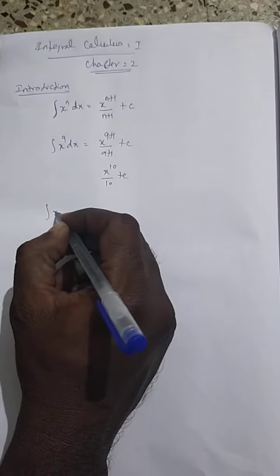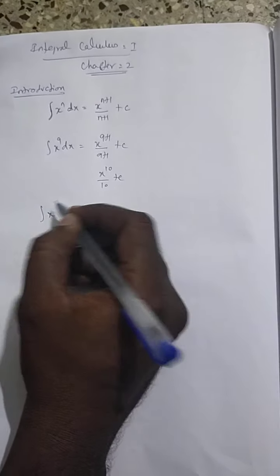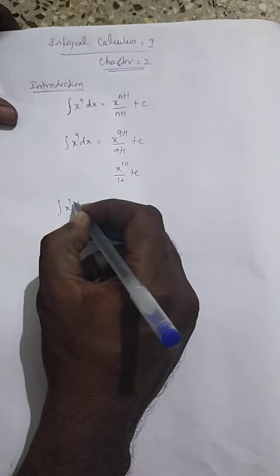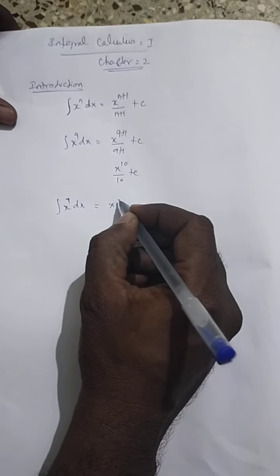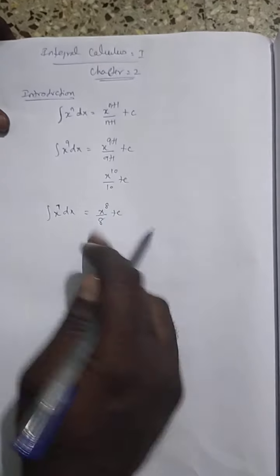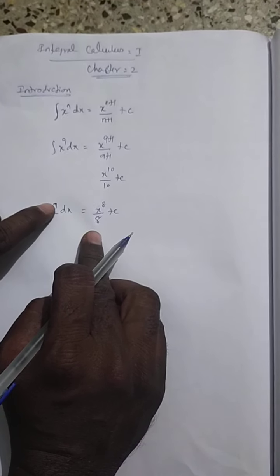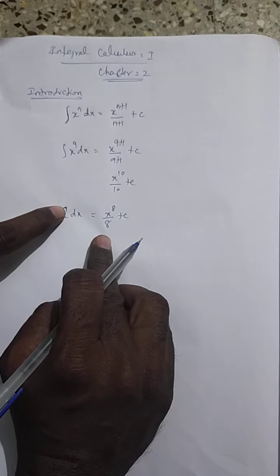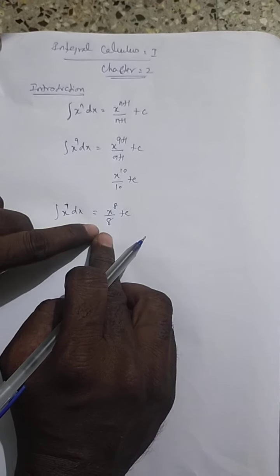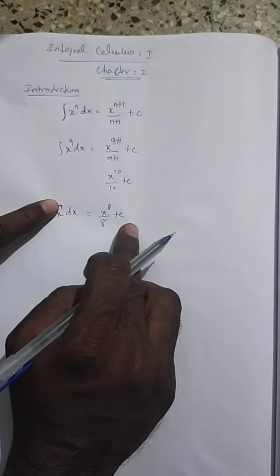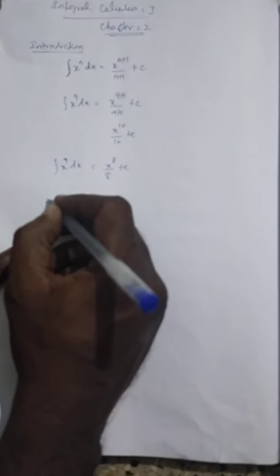Like that, you can take another example: the integration of x power 7 dx. So, what is the answer? You add 1 to the power — 7 plus 1 — so the answer is x power 8 by 8 plus c. Like that, you can continue with other examples.